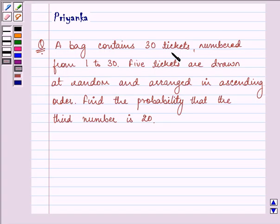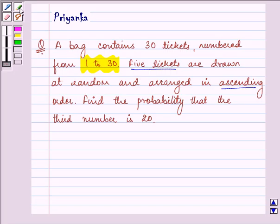A bag contains 30 tickets numbered from 1 to 30. Five tickets are drawn at random and arranged in ascending order. Find the probability that the third number is 20.